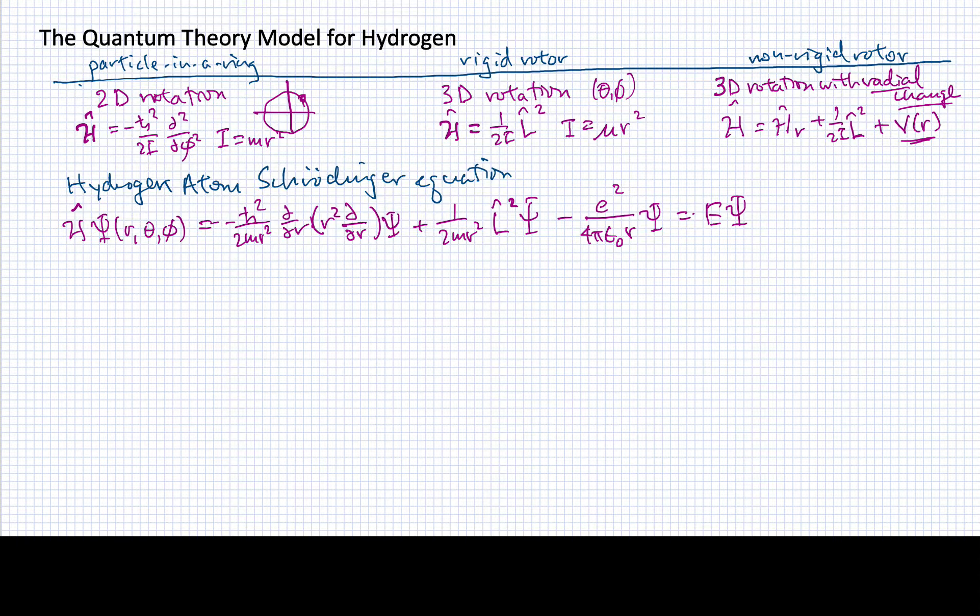This is all equal to the energies of the hydrogen atom times its wave function. This is the time-independent Schrödinger equation which has energy eigenvalues E.